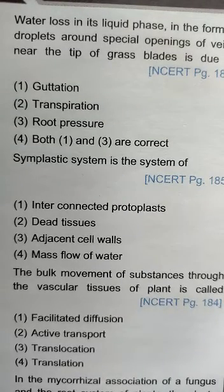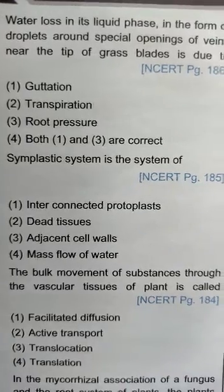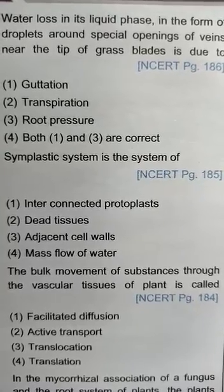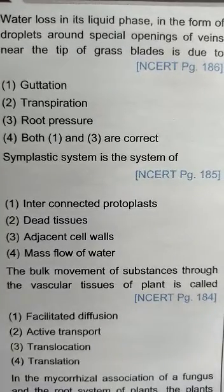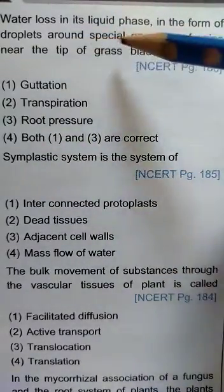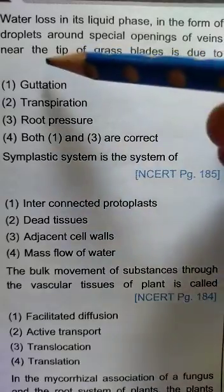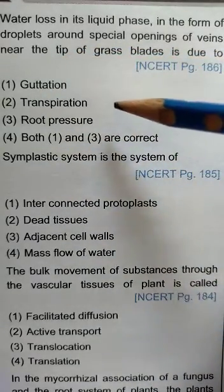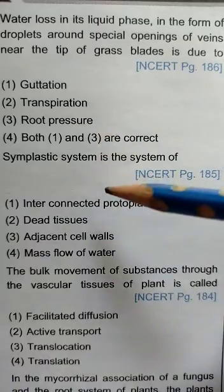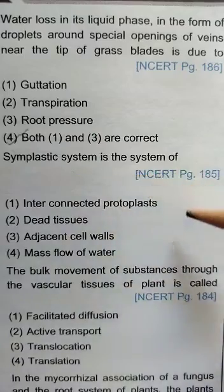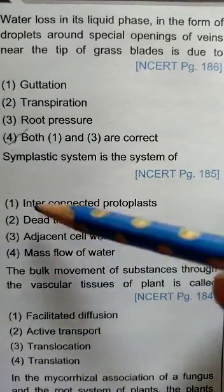Hello students, in this video let us practice some questions based on NCERT lines for the chapter 'Transport in Plants.' The NCERT page number is also given. Water loss in its liquid phase in the form of droplets around the special openings of veins near the tip of grass blades is due to guttation and root pressure. So both option one and three are correct.